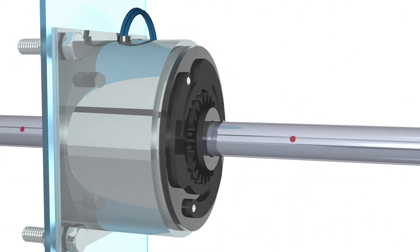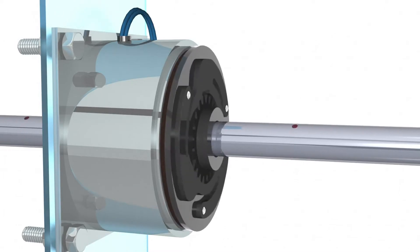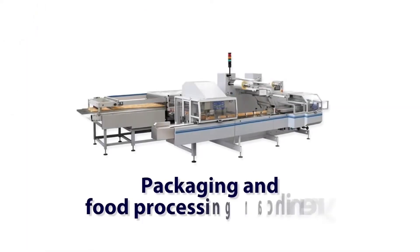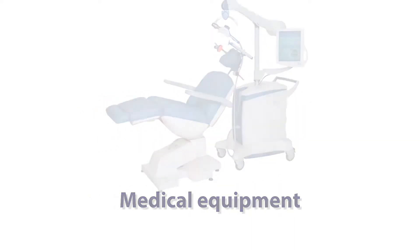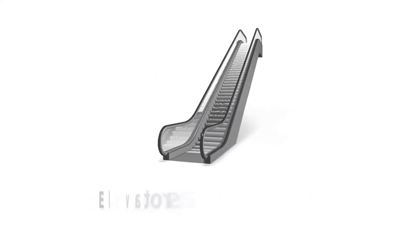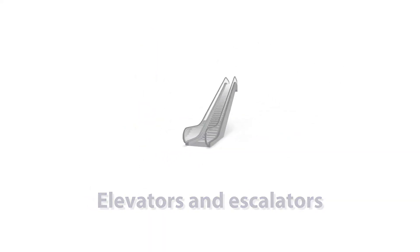Electromagnetic brakes can be found in almost any application that requires the holding or stopping of rotary motion. Typical applications are packaging and food processing machinery, medical equipment, servo motors and robotics, and elevators and escalators.